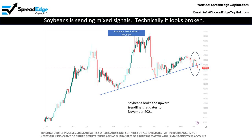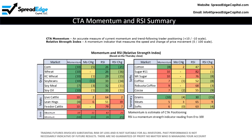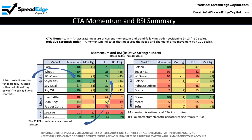Last week, soybeans broke through the bottom of the upward trend line that dates back to November of 2021. This break points to lower prices over the next several weeks. On the other hand, soybeans currently has a maximum negative 10 CTA momentum score, which indicates that funds have little additional capital to add to existing shorts. In addition, the relative strength index is 33 and is hovering just above what many believe to be reversal territory. These two indicators point to higher prices.